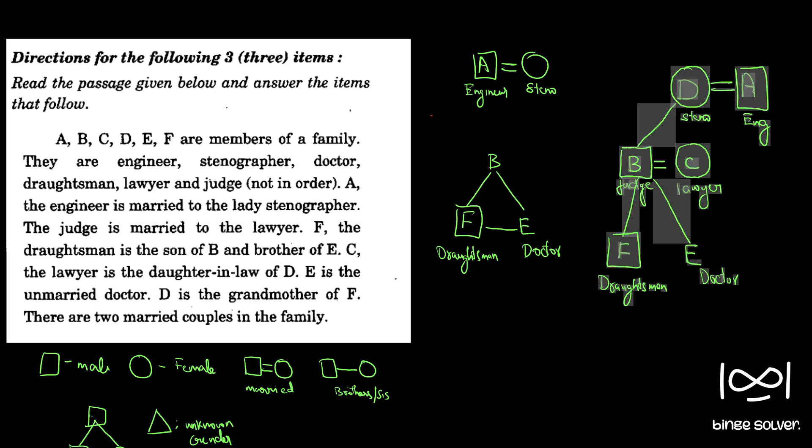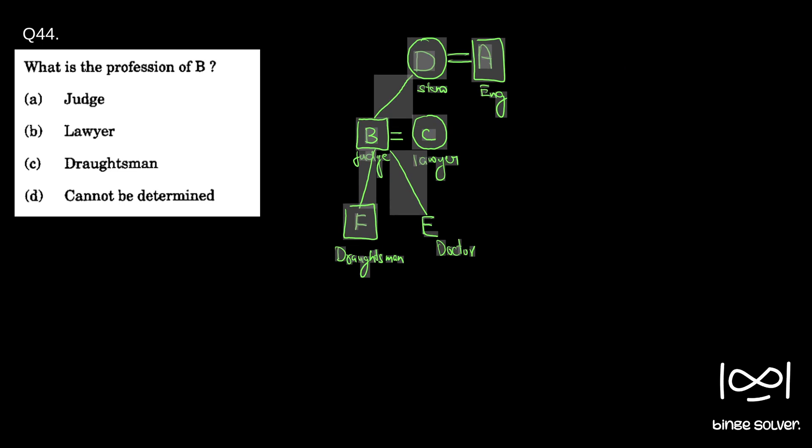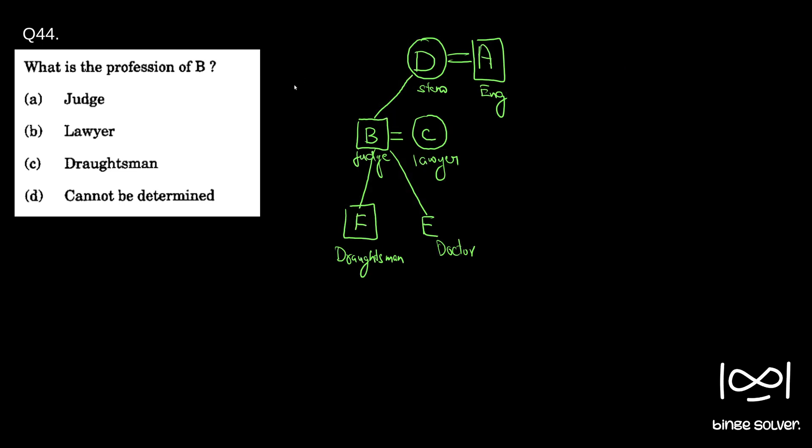We will go to the questions now. First question is question 44. This is our family tree. What is the profession of B? We know that B is a judge, so we will just mark A as our correct answer. A is the correct answer. B is judge.